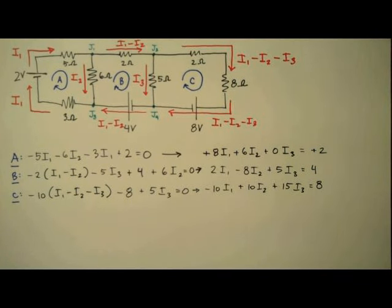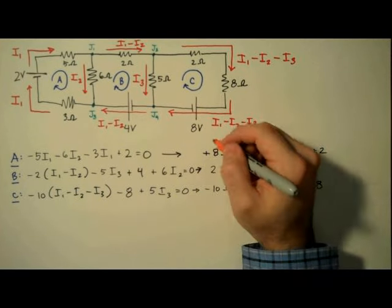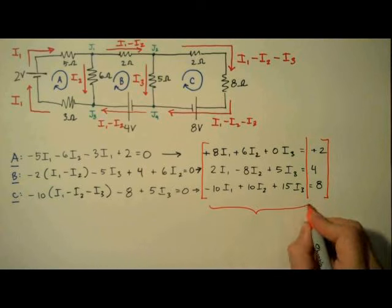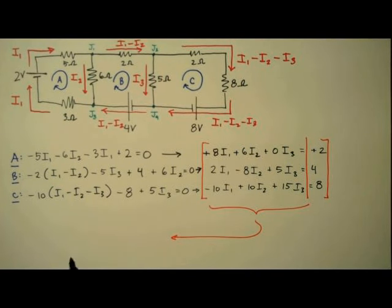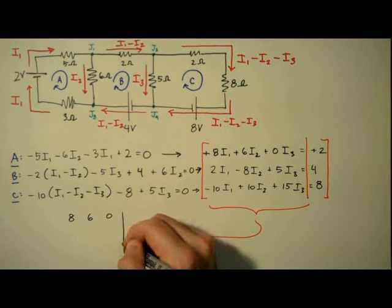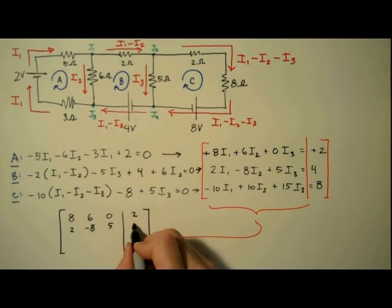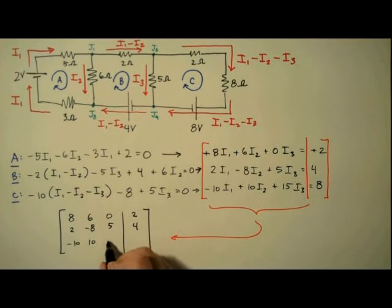To solve these equations, we're going to set up an augmented matrix. I like to draw mine right on top of my equations, so I can see the entries more clearly. So the first row we have 8, 6, 0, and 2. Second row we have 2, negative 8, 5, and 4. Third row, negative 10, 10, 15, and 8. So there's our augmented matrix. Time to flex that matrix muscle of yours, and do some Gauss-Jordan elimination.